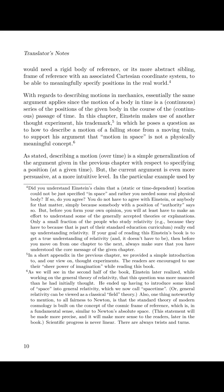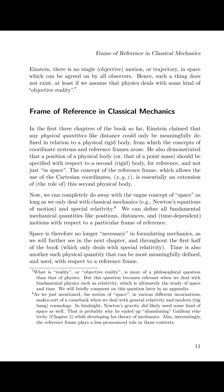In this chapter, Einstein makes use of another thought experiment — his trademark — in which he poses a question as to how to describe the motion of a falling stone from a moving train, to support his argument that 'motion in space' is not a physically meaningful concept. Describing a motion over time is a simple generalization of the argument given in the previous chapter with respect to specifying a position at a given time. But the current argument is even more persuasive at a more intuitive level. In the particular example used by Einstein, there is no single objective motion or trajectory in space which can be agreed on by all observers. Hence, such a thing does not exist, at least if we assume that physics deals with some kind of objective reality.